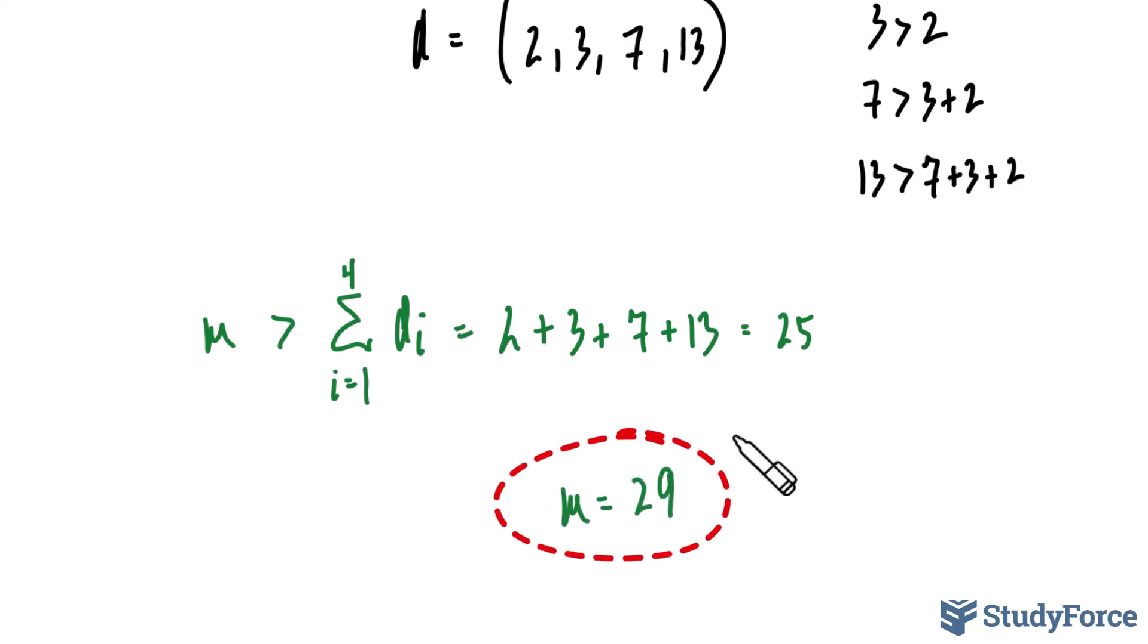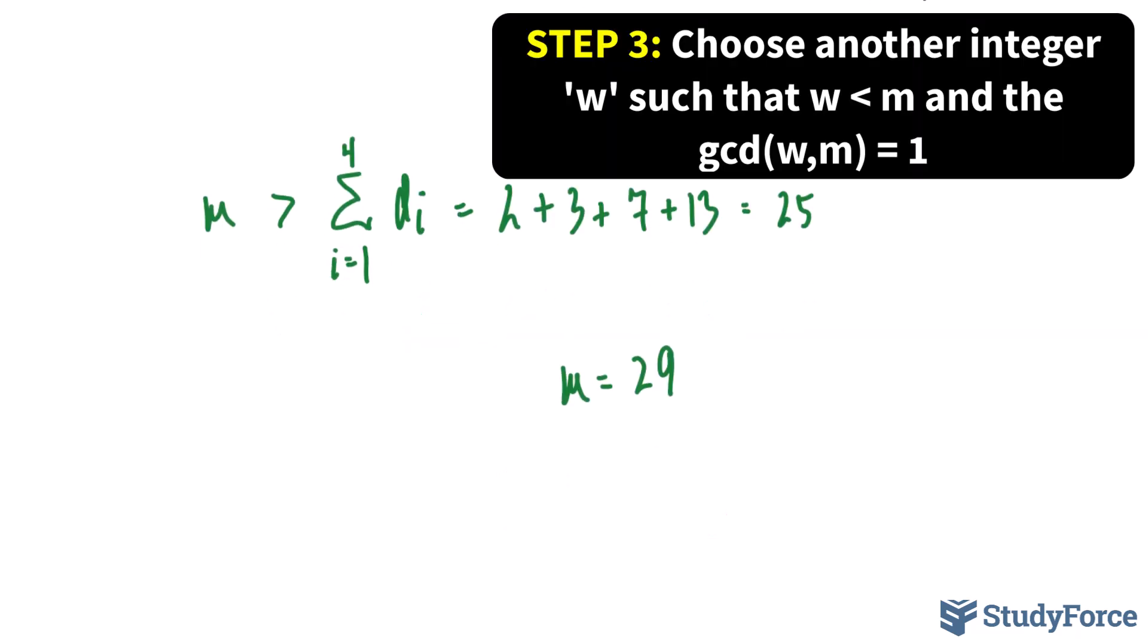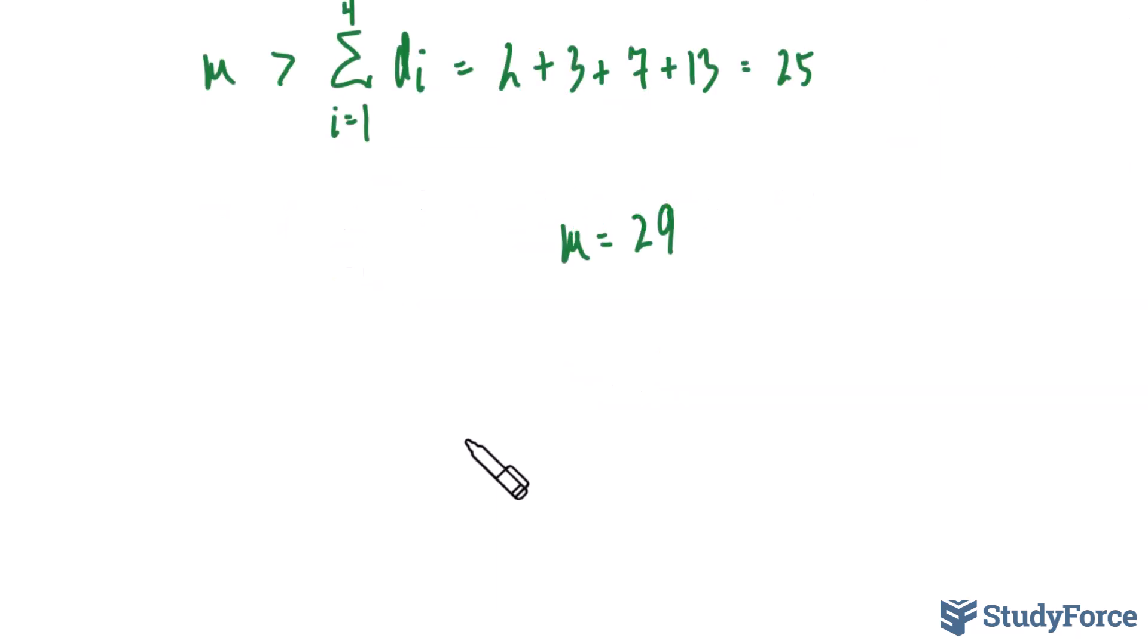You'll find out later that this value you chose will be part of your private key, and will be used to decrypt a message once it's been sent back to you. But more on that later. We have to choose another integer, which we'll call w, such that w is less than m, and it's co-prime with m, meaning that the greatest common divisor between w and m is 1. Let's set w equal to 24. Since 24 is less than m, it's an integer, and it's also co-prime. You can verify that on your own. That is, the GCD between 24 and 29 is equal to 1.